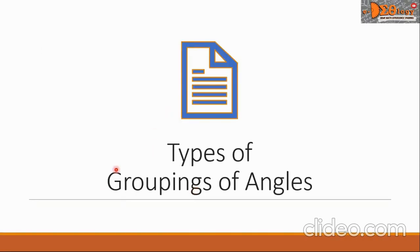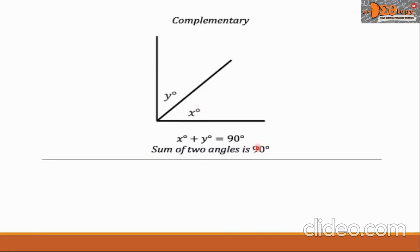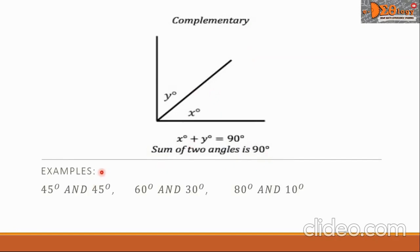Now let us have types of groupings of angles. The first group is complementary angles. These are two angles whose sum is 90 degrees. Some examples of complementary angles are 45 degrees and 45 degrees, another pair is 60 degrees and 30 degrees, and another pair is 80 degrees and 10 degrees.